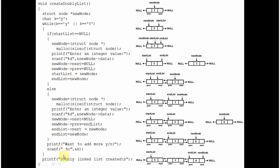Remember that we have to include one blank space while accepting a character from the user. The enter key pressed after entering the character can also be read as a character, and this statement would not pause for the next value of K. By including this extra space, that enter key will be absorbed. Be careful while accepting a byte or single character in C.